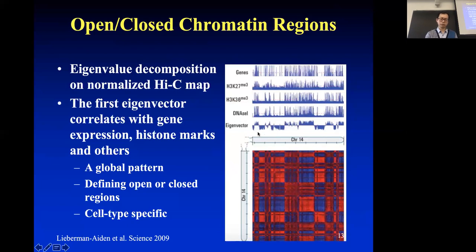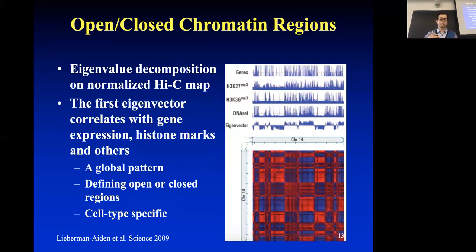After the Hi-C experiment was widely adopted, people did this experiment in different cell lines. Surprisingly, if you compare heat maps from two different cell lines and perform eigenvalue decomposition, you find they are different — meaning this open and closed chromatin pattern depends on something beyond the DNA sequence itself, something like epigenomic changes.